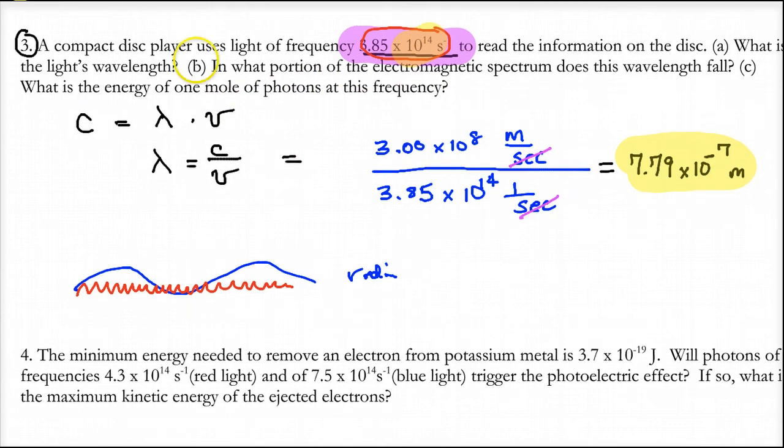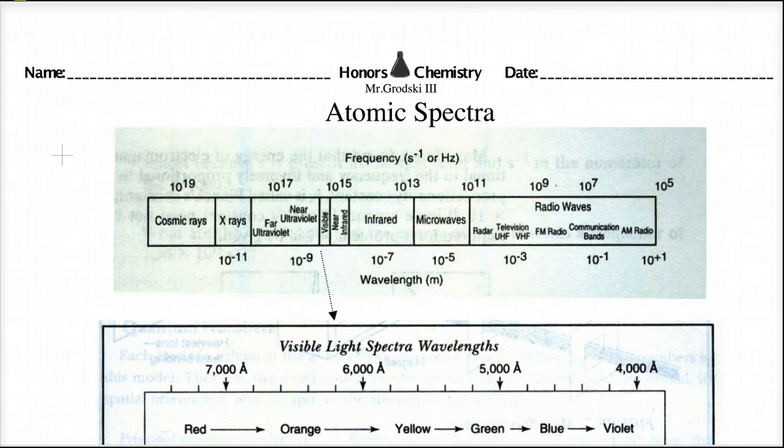Now in the second part of this, I said in the proportion of the electromagnetic spectrum, does the wavelength fall? Where does it fall? Well it falls in the visible region. Now where is that? Let's go to one of your worksheets, your other worksheet. So here we are with the other worksheet.